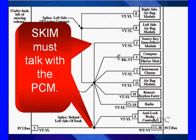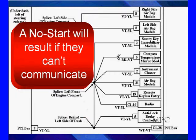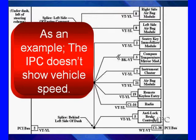So let's go back and look at this again. Remember, we said the SCIM must talk with the PCM to tell it. And that's security key immobilizer module, meaning if it doesn't have the right code, it won't let it start. And then no start results if they can't communicate. So this is very important. In another example, the IPC doesn't show vehicle speed. You have to wonder, what's going on here?